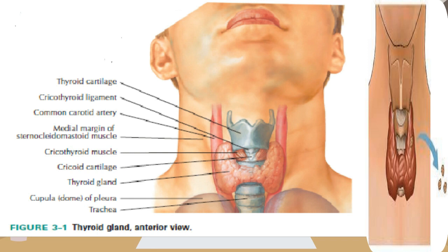The principal blood supply to the thyroid gland comes from the inferior thyroid artery, a branch of the thyrocervical trunk, and the superior thyroid artery, which is the first branch of the external carotid artery. The venous drainage is from the superior and middle thyroid veins, which empty into the internal jugular vein, and the inferior thyroid veins, which empty into the brachiocephalic veins.